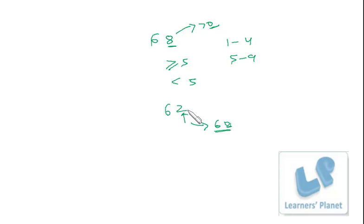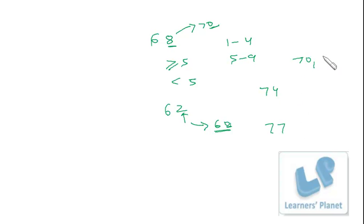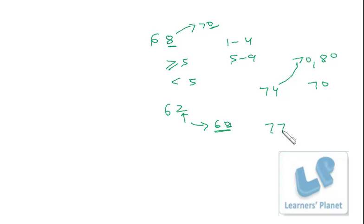Another way to think about it: 60 is closer to 62, and 70 is closer to 68. So we find the closest number with 0 at the units place. For 74 and 77, both lie between 70 and 80. The difference between 74 and 70 is only 4, so 74 is closer to 70 and rounds to 70. The difference between 77 and 80 is 3, so 77 is closer to 80 and rounds to 80. Just check the unit digit: less than 5 means lower side rounding; greater than 5 means upper side rounding.